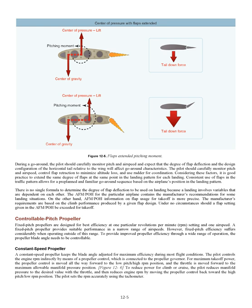Controllable Pitch Propeller. Fixed pitch propellers are designed for best efficiency at one particular RPM setting and one airspeed, providing suitable performance in a narrow range of airspeeds. Fixed pitch efficiency suffers considerably when operating outside of this range. To provide improved propeller efficiency through a wide range of operation, the propeller blade angle needs to be controllable. Constant Speed Propeller. A constant speed propeller keeps the blade angle adjusted for maximum efficiency during most flight conditions. The pilot controls the engine RPM indirectly by means of a propeller control connected to the propeller governor.